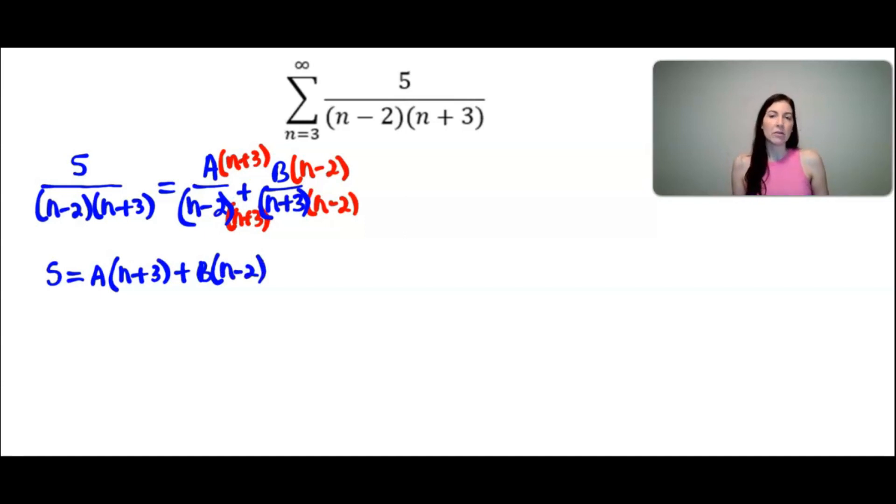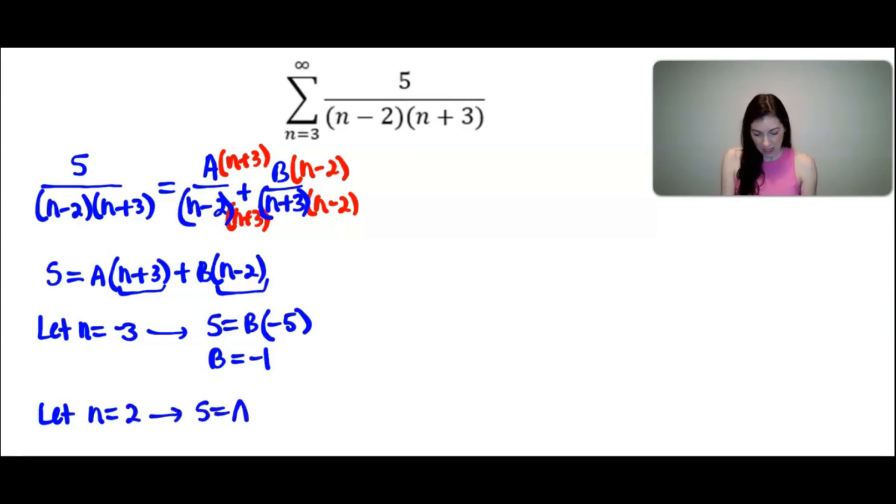Now I need to solve for the values of A and B. What I think is the easiest way to solve for A and B is thinking about what you can let n equal and do this strategically to make one of the terms cancel. The first one is I'm going to let n equal negative 3. Because if n equals negative 3, then this term would go to 0. And so I would get 5 equals B times negative 5. And then you can see that B is equal to negative 1. And then also strategically if I let alternatively n equal positive 2, then that goes to 0. And then I would have 5 equals A times 5. And so A equals 1.